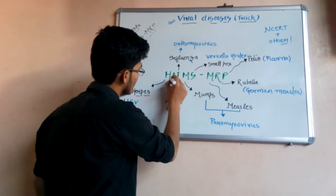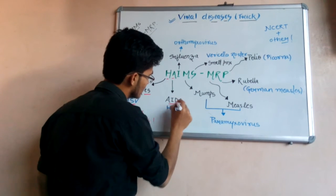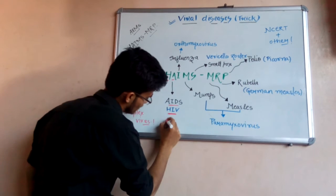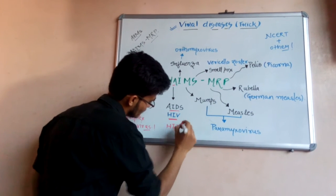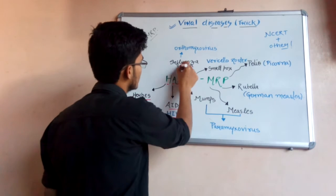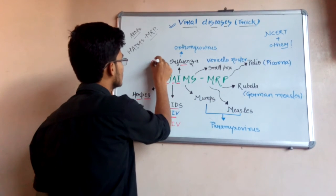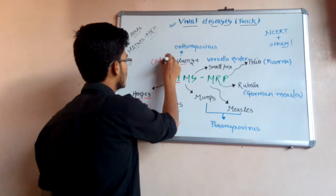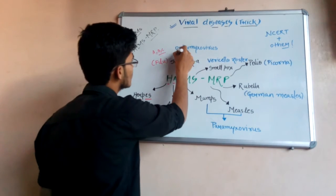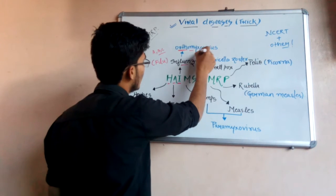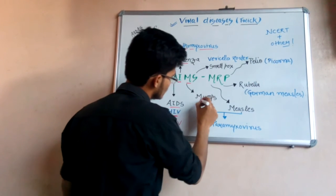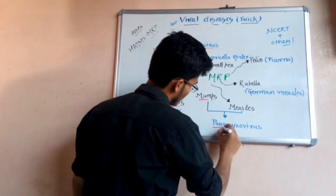The second disease is A, that is AIDS, which is a very well-known disease caused by HIV virus. Third disease is I, that is influenza, commonly known as flu, which is of various types such as A, B, and C. This is caused by orthomyxovirus. After that, mumps, which is caused by paramyxovirus.